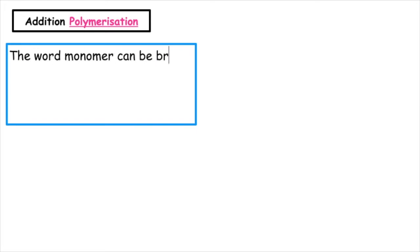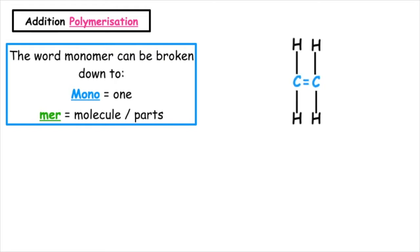The word monomer can be broken down to mono meaning one and mer meaning molecule or parts. The monomers in addition polymerization will always have a carbon to carbon double bond.